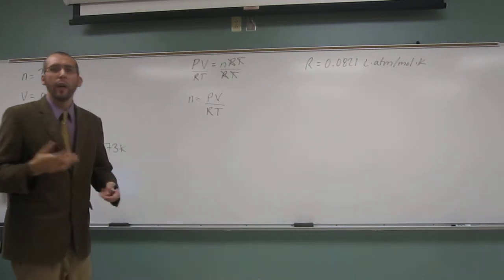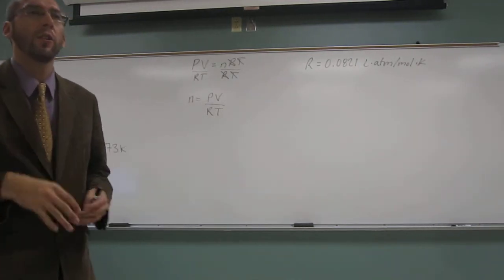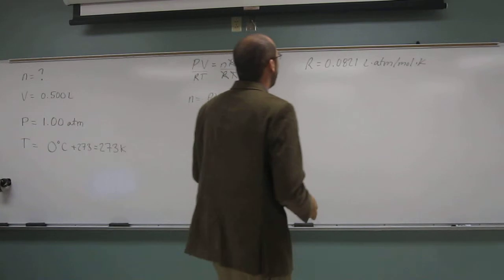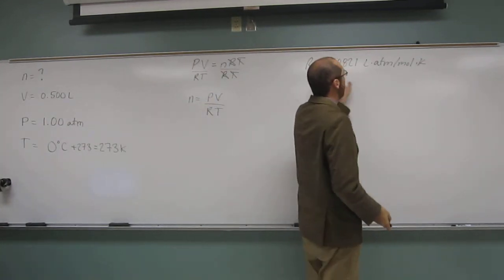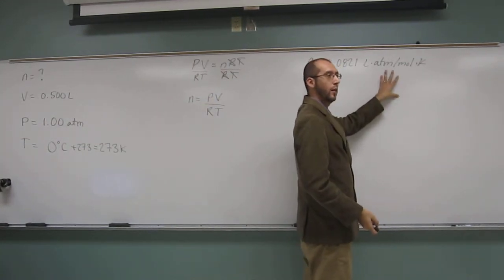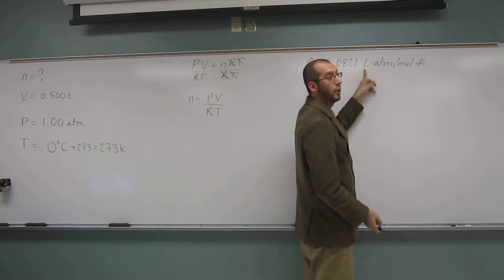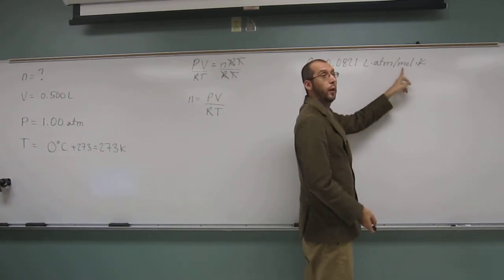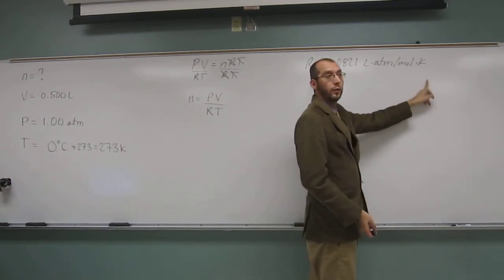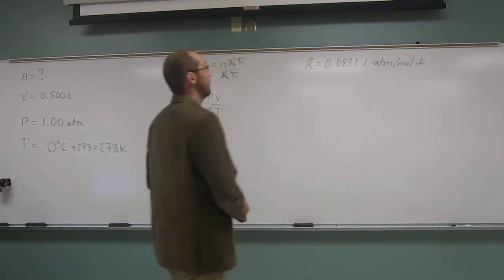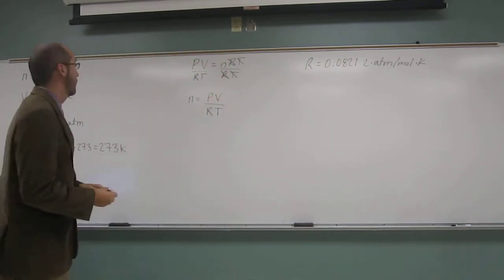So, if you forget what pressure units, or what temperature units, or what volume units do I have to have these things in, you can just go back and look at this constant, it'll tell you. Volume units have to be in liters. Pressure has to be in ATM. The number has to be in moles, temperature in Kelvin. Is everybody okay with what I'm saying? Yeah.